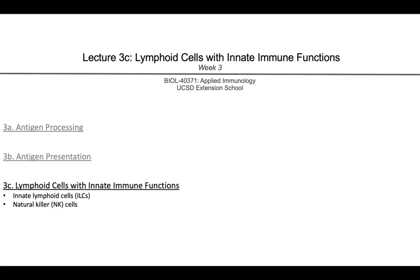These include things like classical innate lymphoid cells, or ILCs, as well as a type of ILC called a natural killer, or NK cell, which is really important for defense from viral infections. This will conclude the innate immune system lectures and transition nicely into our next Week 4 module, where we'll start learning more about adaptive immune responses.